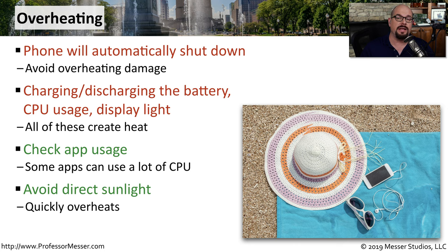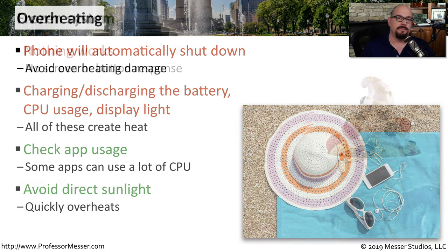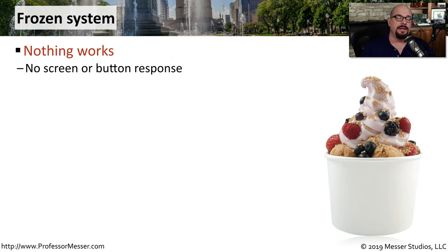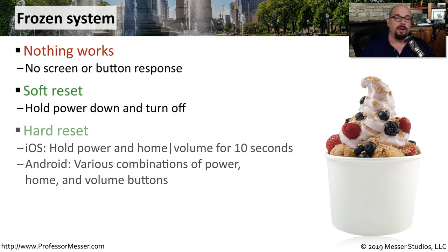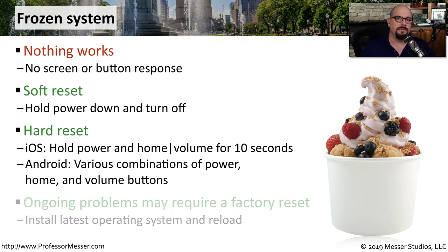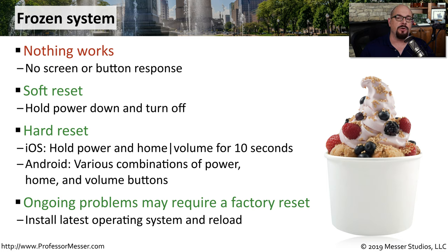You also want to be sure to leave your phone out of direct sunlight at the beach or on the dashboard of your car, as it will quickly overheat and cause the system to automatically shut down. Sometimes an app will cause an entire mobile device to stop working — nothing changes on the screen, it doesn't respond to any button presses. You can try a soft reset, but often it may require a hard reset. In iOS, that's holding the power button and the home key, or holding the power button and the volume key for 10 seconds. On Android, there are different combinations, including holding down power, home, and volume buttons. If your mobile device is constantly freezing, you may want to perform a factory reset, which will delete all applications and data and restore everything as if fresh from the factory. You can then reinstall the applications and data you need and see if the freezing problem disappears.